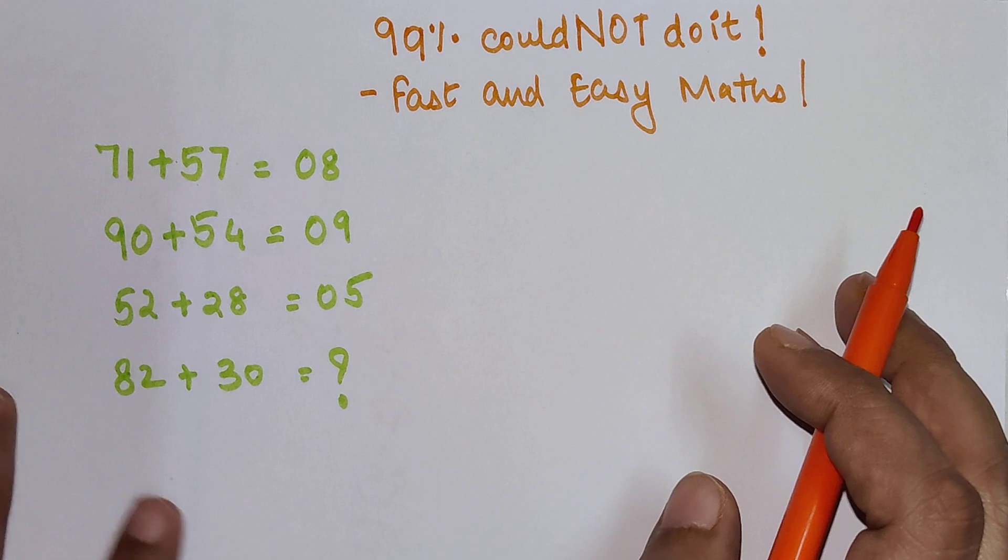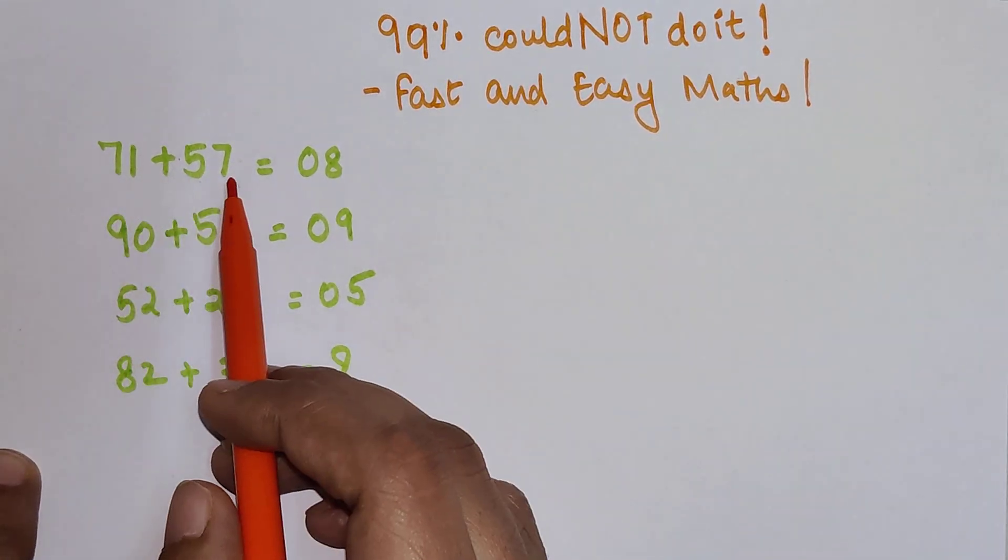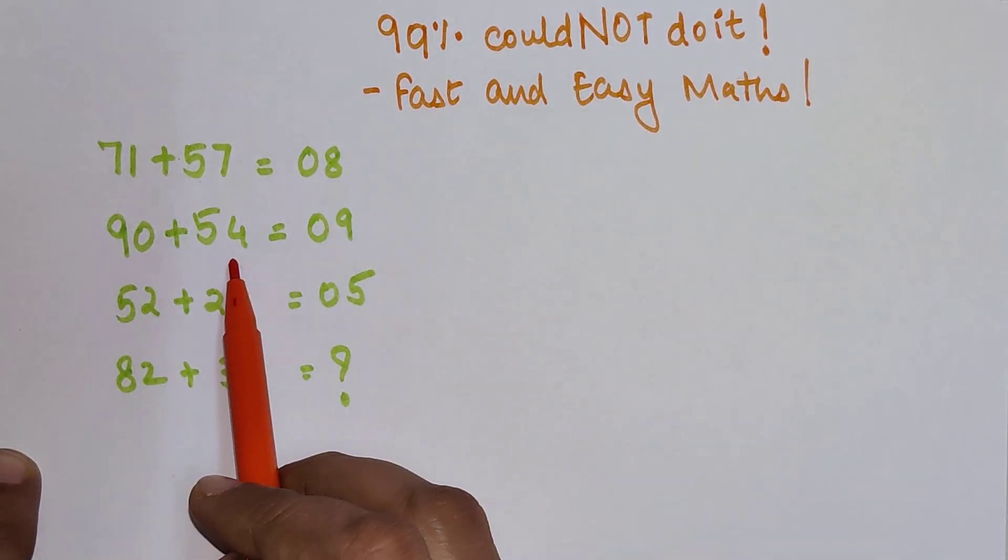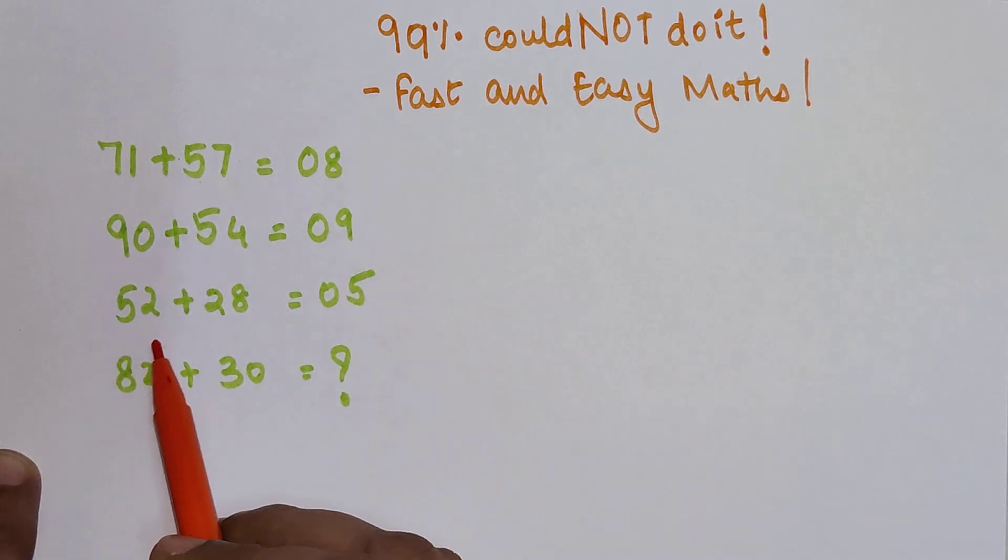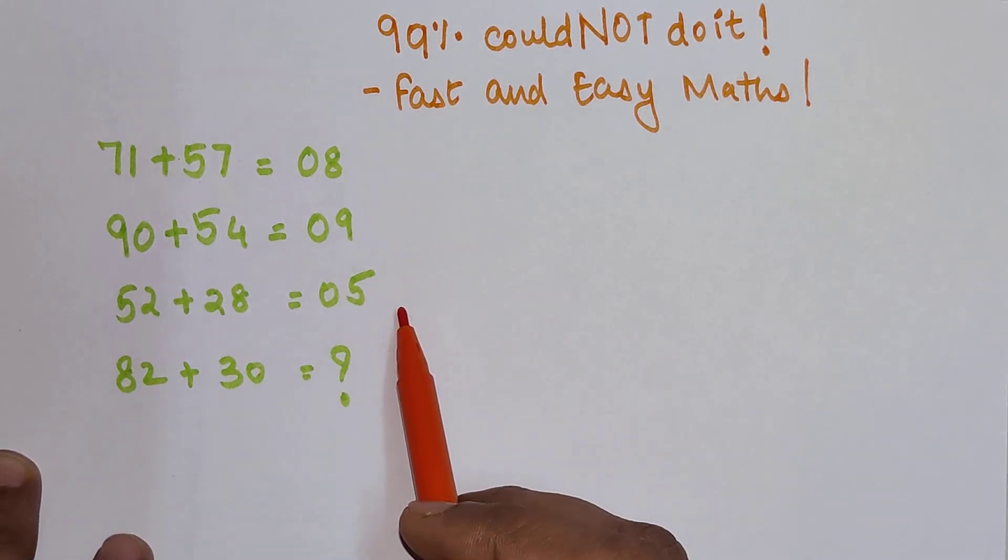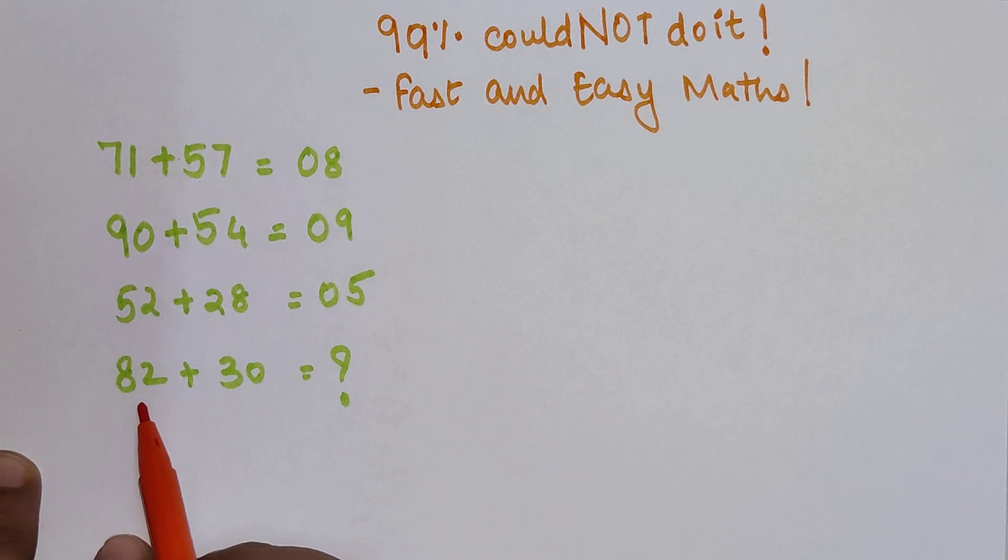Okay, so the question goes: 71 plus 57 is giving you 08, 90 plus 54 is giving you 09, 52 plus 28 is giving you 05, and we have to find out what is 82 plus 30.